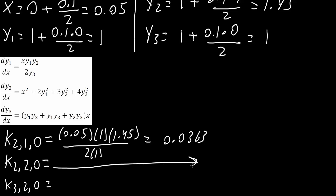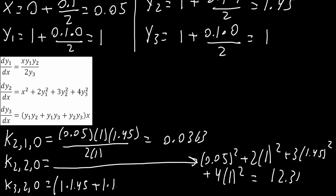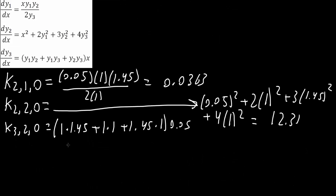Next the second equation: x squared plus 2 times y1 squared plus 3 times y2 squared plus 4 times y3 squared. Plugging in: 0.05 squared plus 2 times 1 squared plus 3 times 1.45 squared plus 4 times 1 squared, giving 12.31. Finally the third equation: 1 times 1.45 plus 1 times 1 plus 1.45 times 1, times x which is 0.05, giving 0.195.